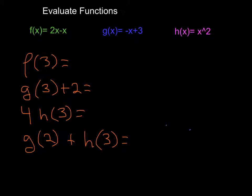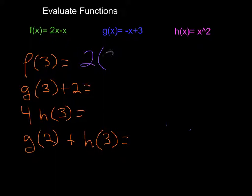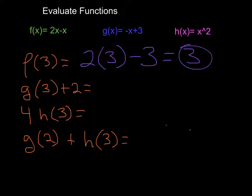You have to know which function you're going into. So when I ask you to evaluate f of 3, you have to go into the f function, not the other two functions. Wherever I see an x, I'm going to plug in a 3, so that's going to become 2 times 3 minus 3. Following my order of operations, 6 minus 3 is simply 3.